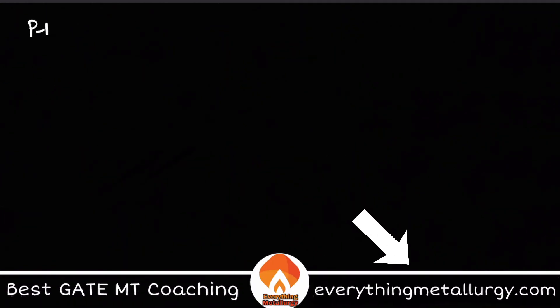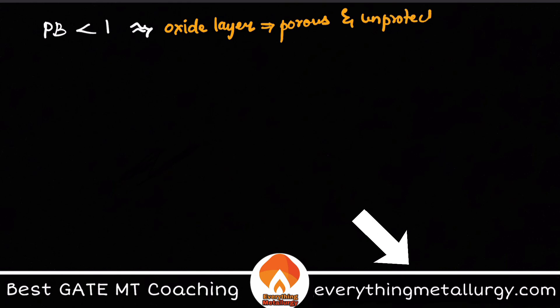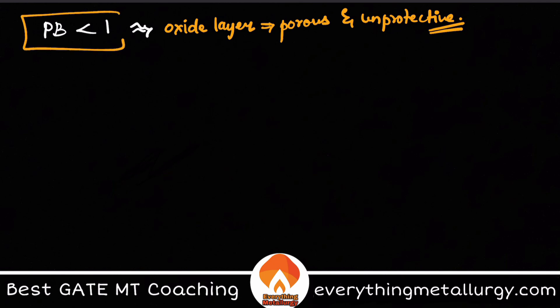If the PB ratio is less than 1, the oxide layer formed on the surface will be porous and obviously unprotective. Sometimes a thin oxide layer can act as a protective layer to stop further oxidation, but if PB is less than 1, the volume of metal oxide relative to the metal is very small, meaning the oxide is not properly spread out — so it is an unprotected, porous layer.